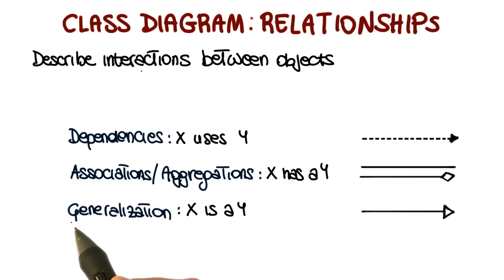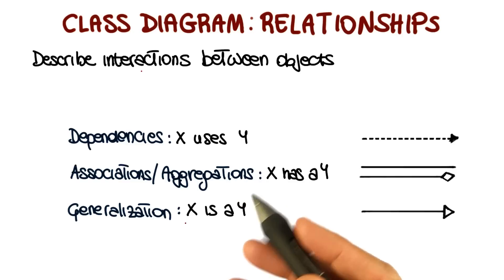Finally, the third type of relationship is what is called generalization, and that can be expressed as x is a y. So this is the relationship that expresses inheritance, specialization between two classes.